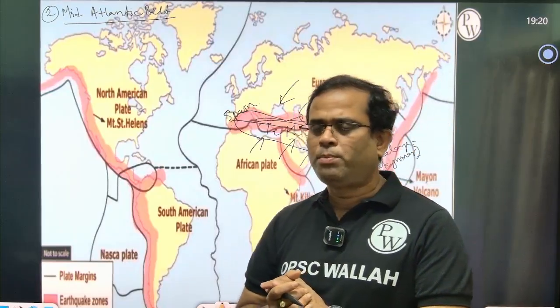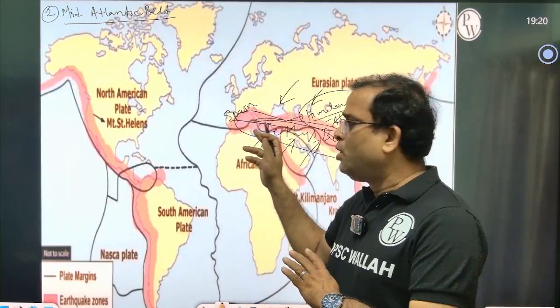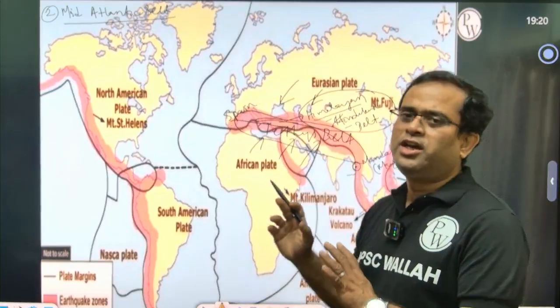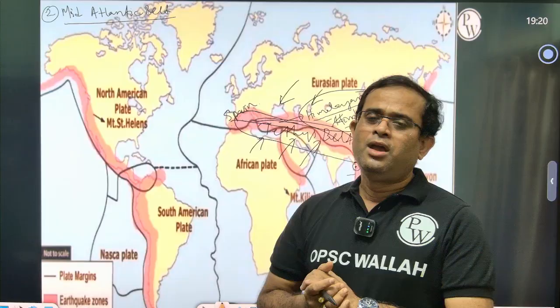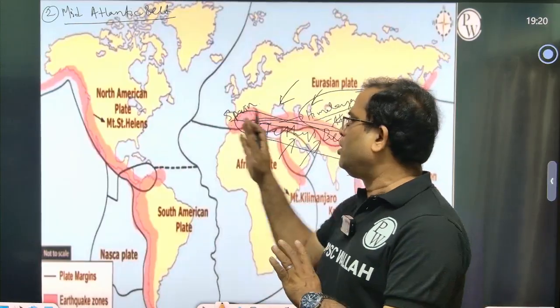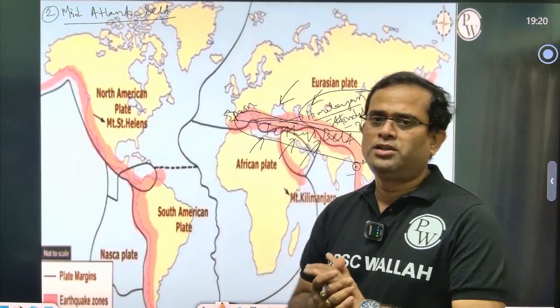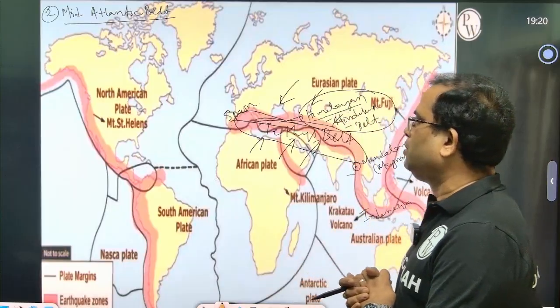This belt covers from few parts of Southern Europe to Asia, through thick population zones. That is why many casualties are found in this Mid-Atlantic Belt region. Compared to the Ring of Fire which accounts for 70% of earthquakes, the Mid-Atlantic Belt accounts for 20% of earthquakes.